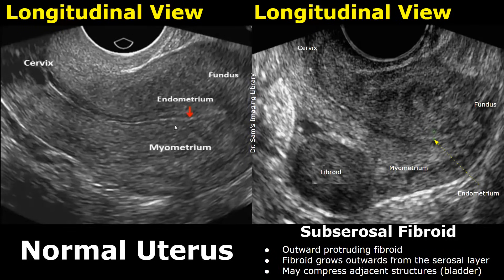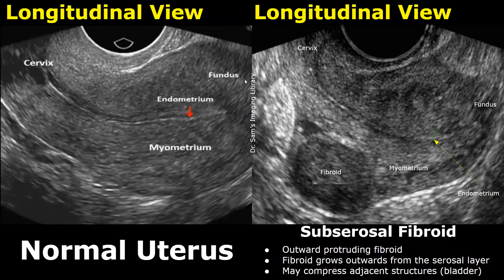These are transvaginal images of the uterus. In the normal uterus we can see a thin endometrial stripe. This thick muscular layer is the myometrium. The upper portion is the fundus and the lower portion of the uterus is the cervix.